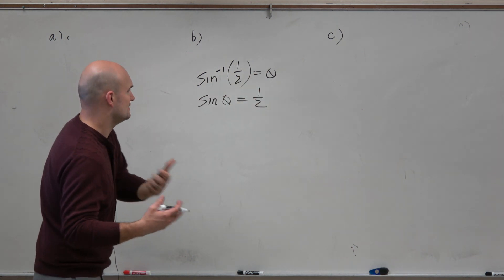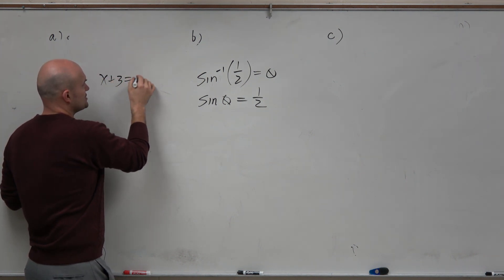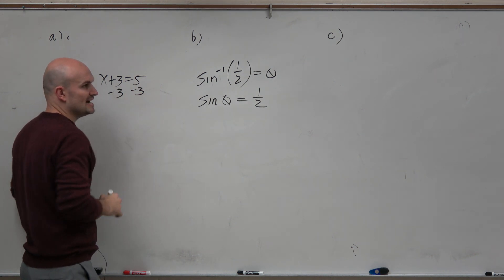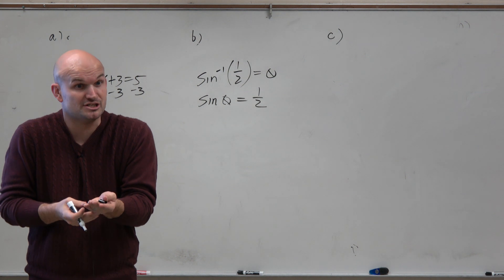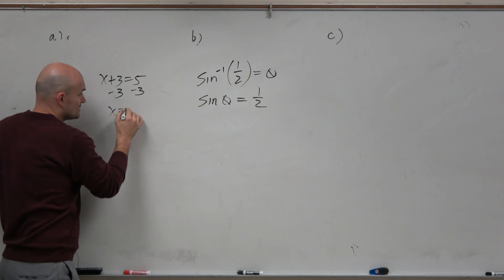And again, here's what I want you guys to take away from this. Remember when you solved equations, x plus 5 equals 3. The first thing you did was subtract the 3 on both sides. That's because subtraction is the inverse operation of addition. It undoes adding of 3. So we got x equal to 2.